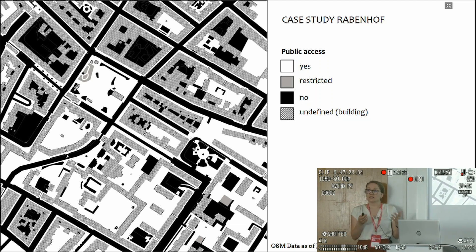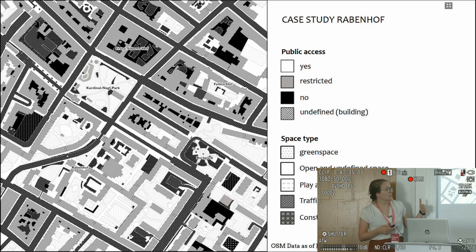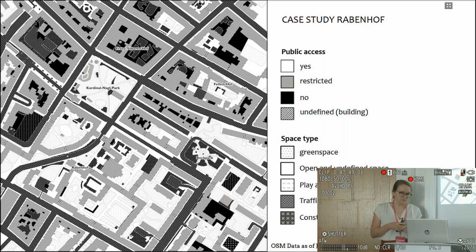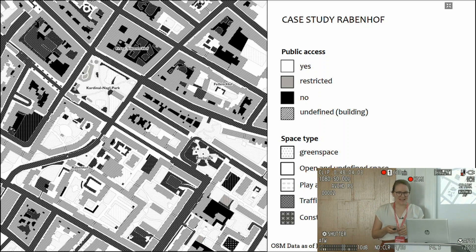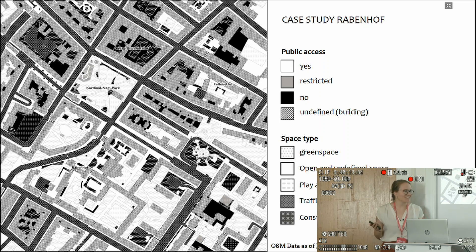The resulting GeoJSON not only has access information but also the space type, which can be added as another layer for a more differentiated picture of public spaces. You can see lots of inaccessible traffic area, but also some playgrounds under play and sports — some inaccessible, some accessible, and some restricted. The resolution is not great here, but it allows comparisons between different neighborhoods and technically even cities, though the Python script is not optimized for performance, so processing a whole city would take a very long time.